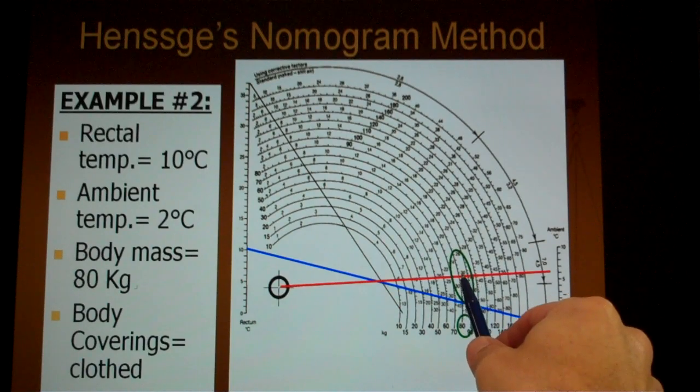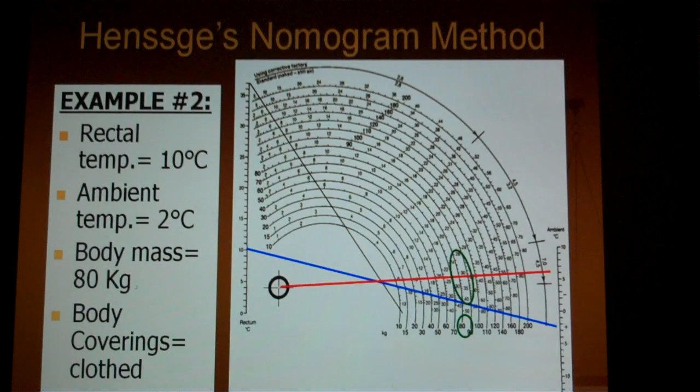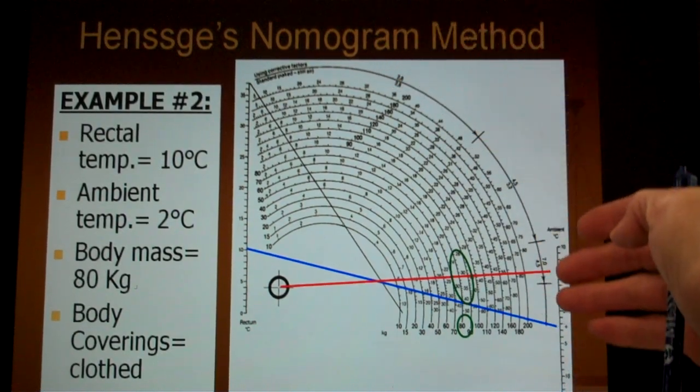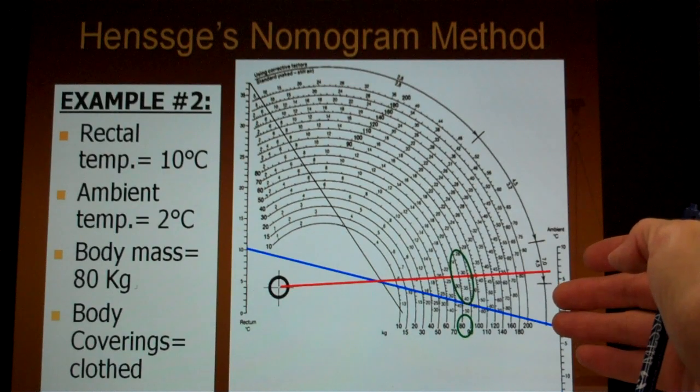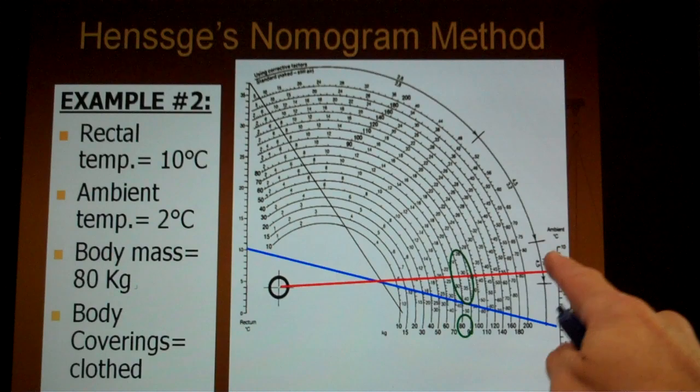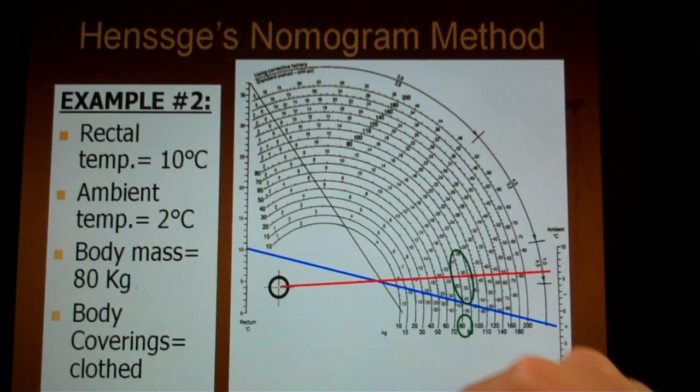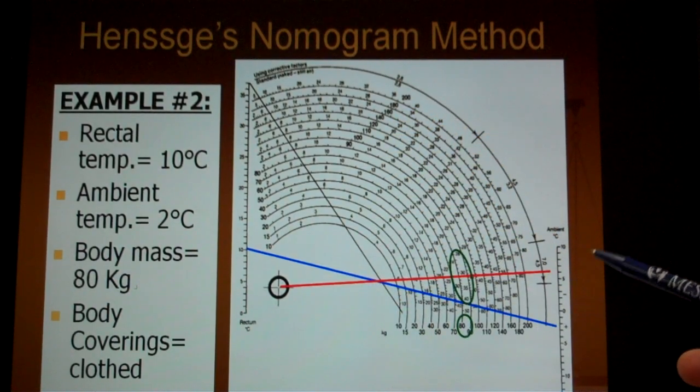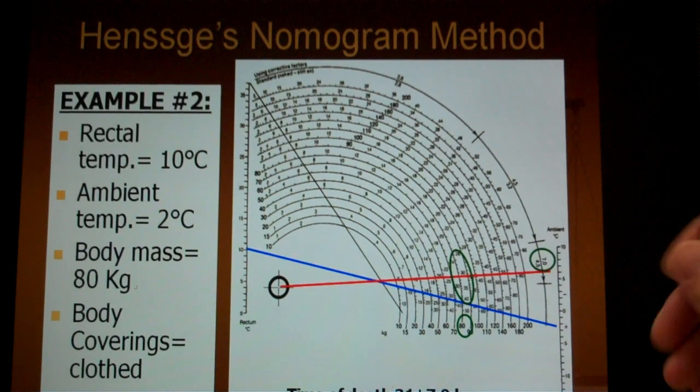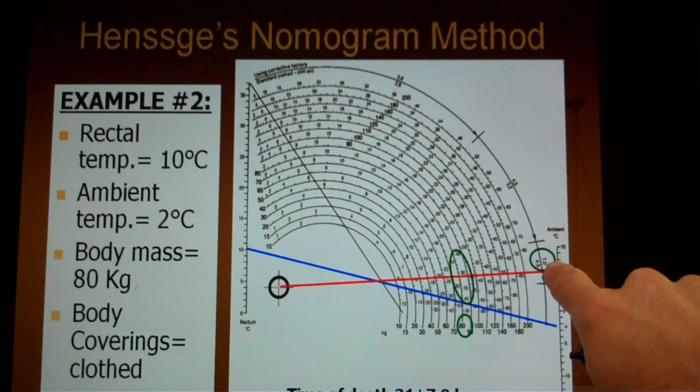The other thing I need to know then is was the individual found with clothing or not? That's where this outer arc comes into play. The digits on the outside refer to a plus or minus if an individual is clothed. If the person was not clothed, I'd use the inner numbers. So in this particular example, I'm going to say this person probably has been dead for at least 30 to 31 hours and I'm going to say plus or minus 7 hours because they had clothing.